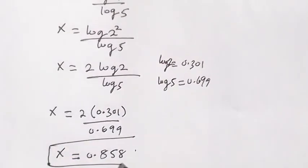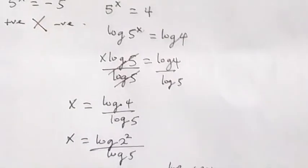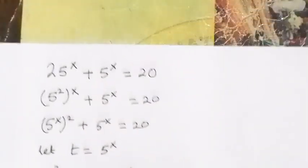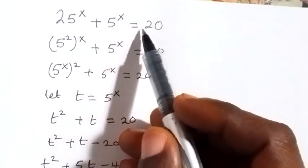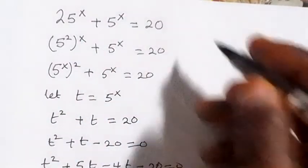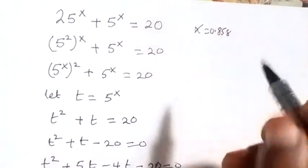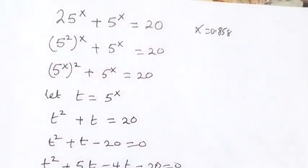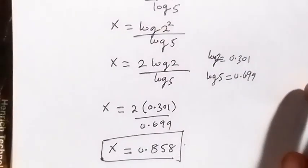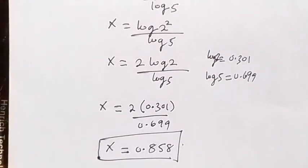So this is the approximate value of x from this problem. When we substitute x equals 0.858 back into the original equation, 25 raised to power x plus 5 raised to power x equals 20, the left side will be approximately 20. That's the end of this problem. Thank you for watching — please subscribe to this channel for more videos. See you in the next class, bye for now.